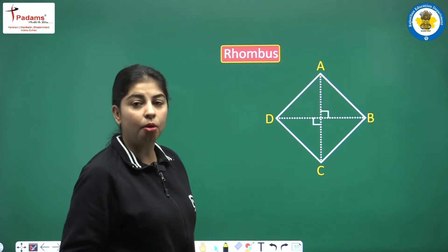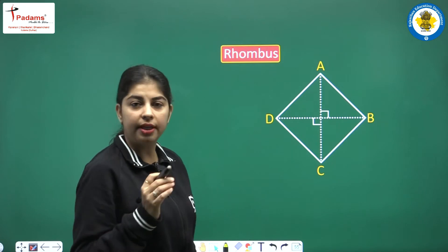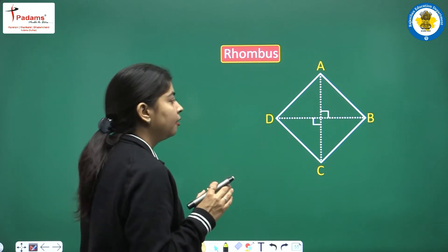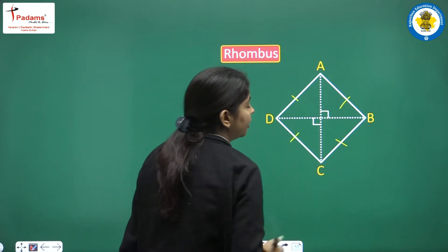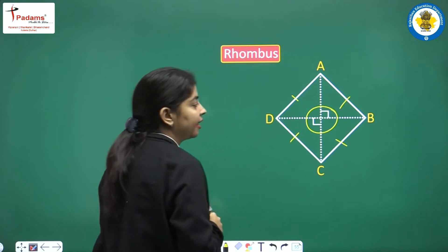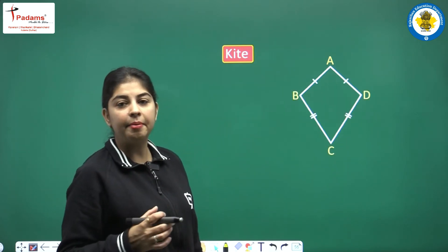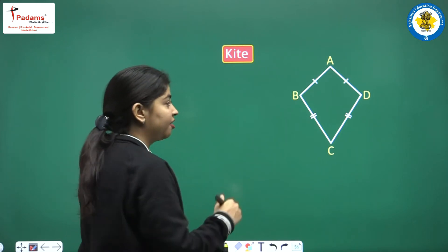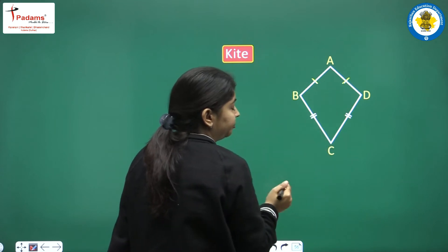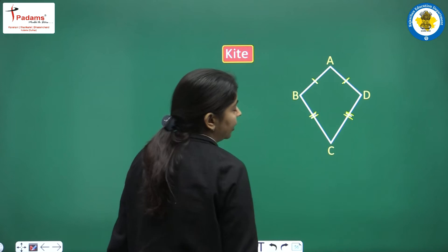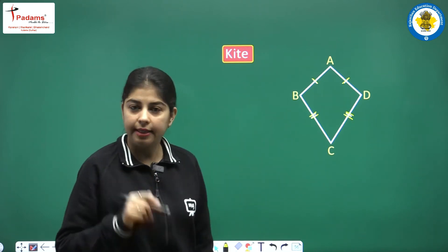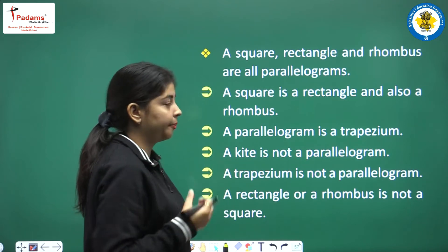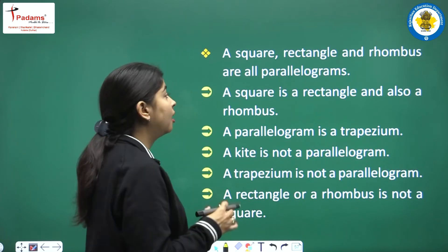Next we have a rhombus. Like a square, all sides are equal — A, A, A, A — but in a rhombus the angles are not necessarily 90 degrees. The diagonals are perpendicular bisectors of each other, just like in a square. Next we have a kite, where two pairs of adjacent sides are equal: AB equals AD and BC equals CD.